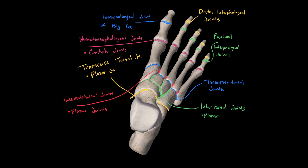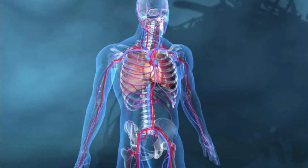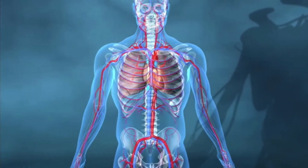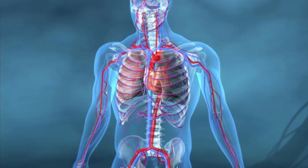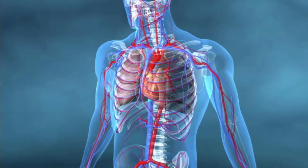And those are all the different joints located in the inferior limb. I hope it came easy to you because they are very similar to the joints found in the superior limb. Keep on studying, I hope you do well, and I will catch you guys later. Take care.